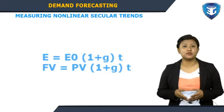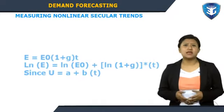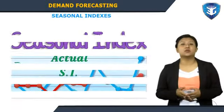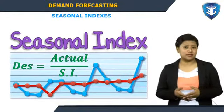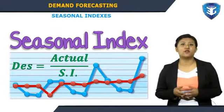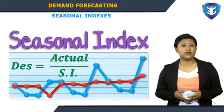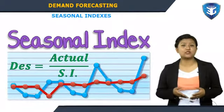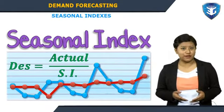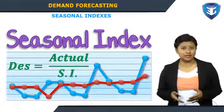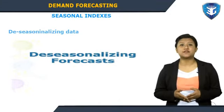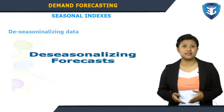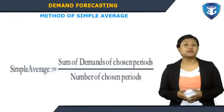The first approach uses the conventional compound interest formulation. The second method is to use a log-linear regression model. To construct seasonal indexes: compute a centered 1-year, 4-quarter moving average of the data; average successive centered moving averages so the result corresponds to the same period as the quarterly raw data; compute the ratio of each data point to its corresponding moving average value — these ratios are called specific seasonal indexes. To de-seasonalize data, divide the raw data by the seasonal index.